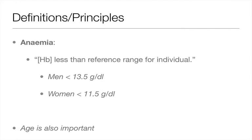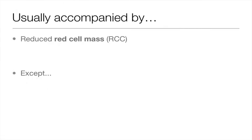Anemia can be defined as a haemoglobin that is less than the reference range for an individual. Different labs and hospitals will have different reference ranges, but generally it's worth learning two figures: for men, anemia is less than 13.5, and for women, less than 11.5. Anemia is usually accompanied by a reduction in red cell mass, except in pregnancy where both red cell mass and plasma volume increase, causing a relative dilution.